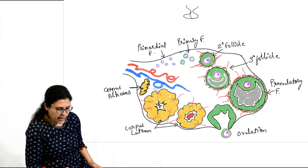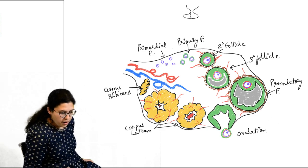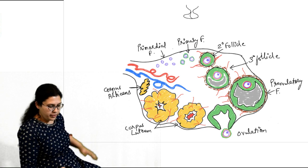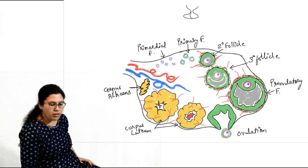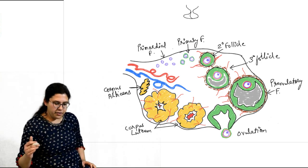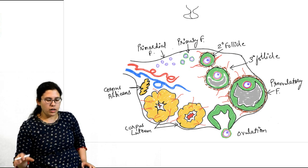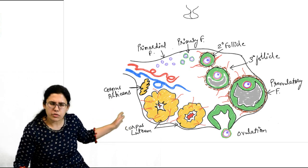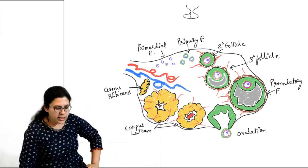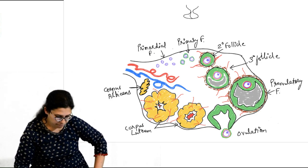In this figure — a cut section of an ovary — you can see primordial follicles followed by primary follicle, secondary, tertiary, pre-ovulatory follicle, then ovulation, and then corpus luteum. Now let's talk about each follicle in detail.